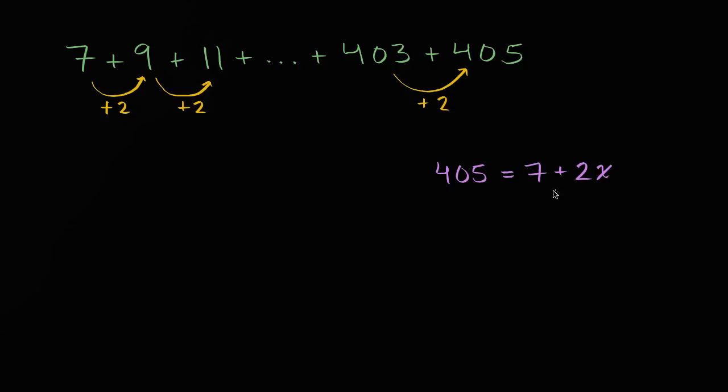And so that is going to be equal to, let's see, if we subtract 7 from both sides, we have 398 equals 2x. Or, divide both sides by 2, and we get this is going to be 199, 199 equals x.